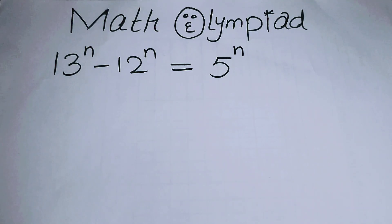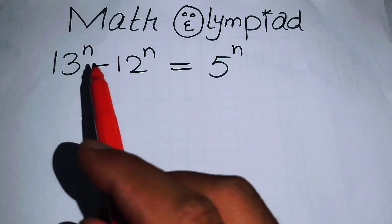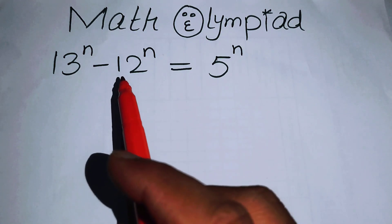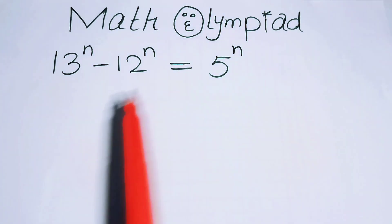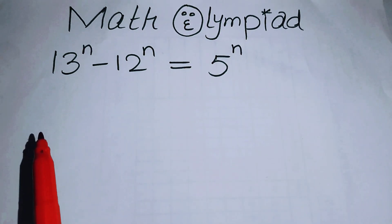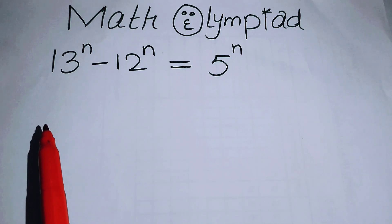Hello everyone, welcome back to the Map of Mathematics. In this video we are going to solve this nice exponential equation problem. We have 13 to the power of n minus 12 to the power of n equals 5 to the power of n, and we will solve this problem for the values of n.